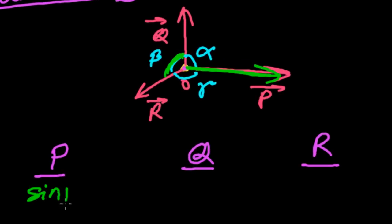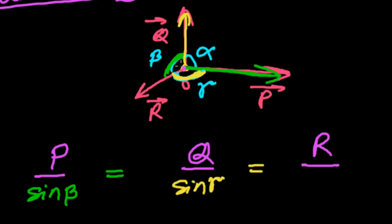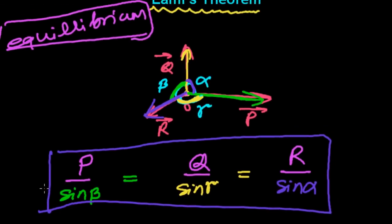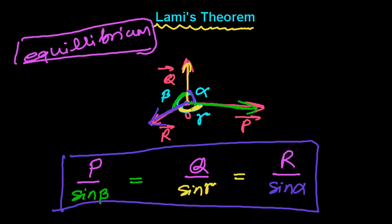which is the angle between forces R and Q. Similarly, force Q is proportional to sine of gamma, the angle between forces P and R. And force R is proportional to sine of alpha, the angle between forces P and Q. This is the statement of Lami's theorem: if three forces acting at a point are in equilibrium, each force is proportional to the sine of the angle of the opposite two forces.